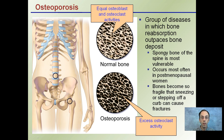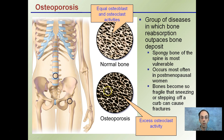In osteoporosis specifically, spongy bone of the spine is most vulnerable. This occurs most often in postmenopausal women because of a change in hormones, and bones become so fragile that sneezing or stepping off a curb can cause fractures. In extreme cases, even everyday activities can cause bones to be fractured or broken.